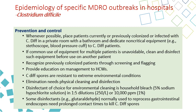Since C. difficile is highly resistant to extreme environmental conditions, appropriate cleaning with a disinfectant of choice is required. The preferred disinfectant is household bleach — typically five percent sodium hypochlorite solution — diluted with water at 1:5, adding 250 ml per liter of water to create a 1:10,000 or one percent solution. Glutaraldehyde, normally used in reprocessing gastrointestinal endoscopes, can also address C. difficile contamination.